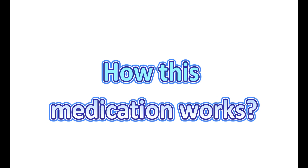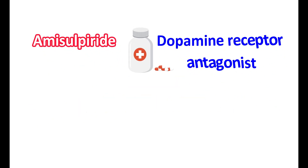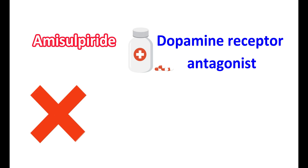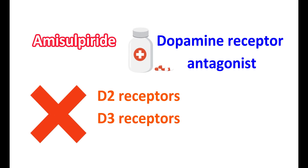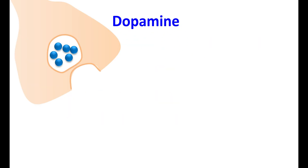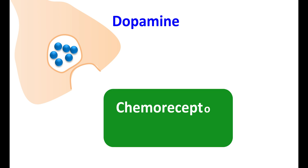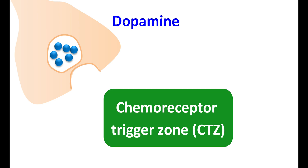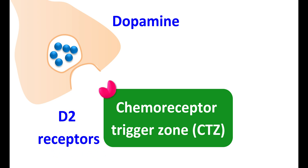Amisulpride is a dopamine receptor antagonist that can block both dopamine D2 and D3 receptors. Dopamine released from neurons by sensory stimulation can activate the chemoreceptor trigger zone (CTZ), an area responsible for receiving signals from sensory neurons. On the CTZ, D2 receptors are expressed and activated by dopamine released from neurons.